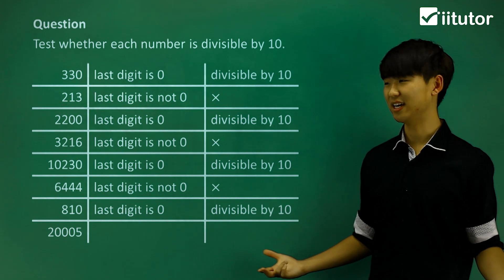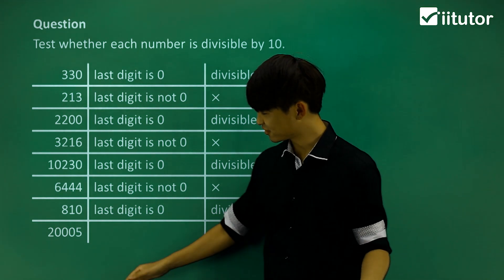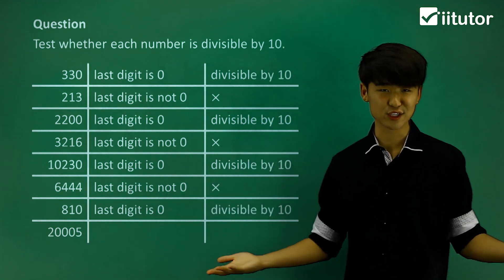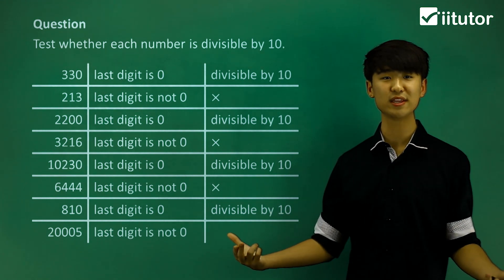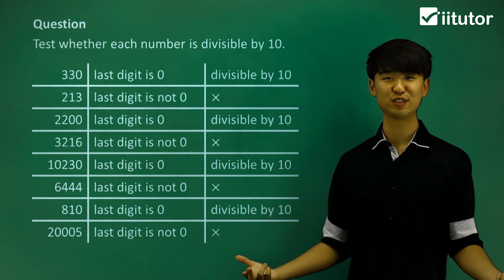And finally, 20005, the last digit is 5. So last digit is not 0, then this number, 20005, is not divisible by 10.